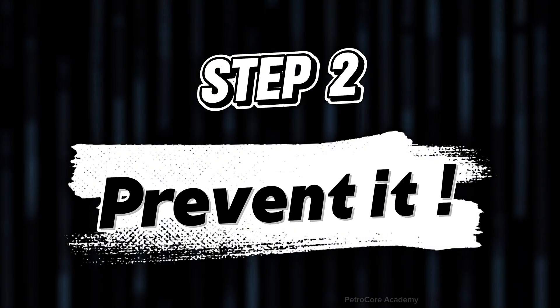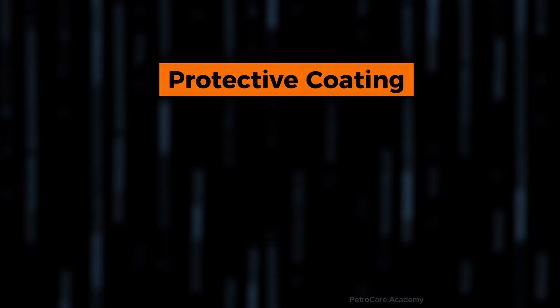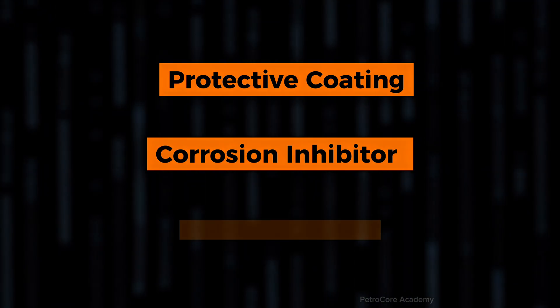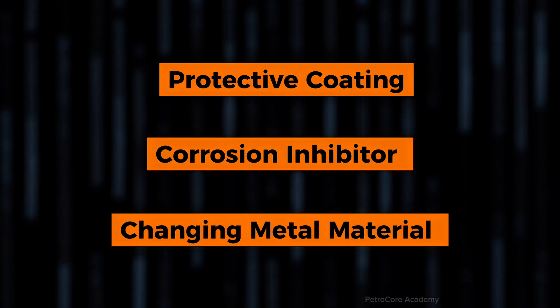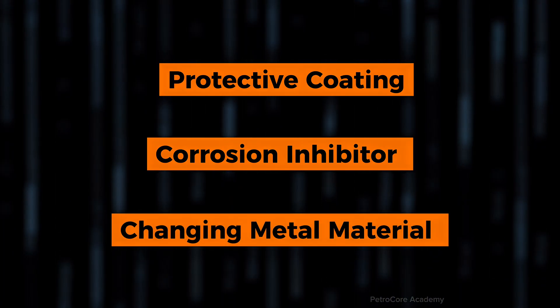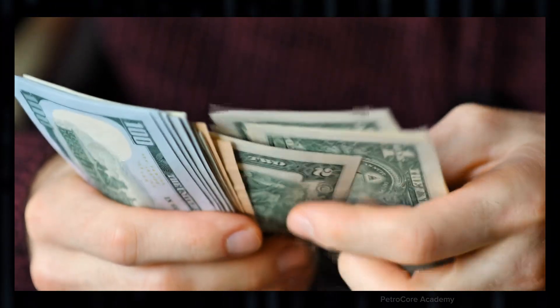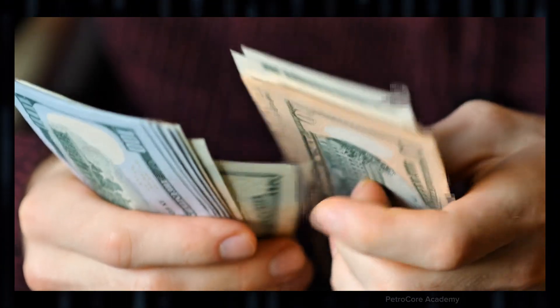Step 2: Prevent it. We can fight back using protective coatings, corrosion inhibitors, or even switching to more resistant materials like stainless steel or exotic alloys. Sure, they're pricier, but so is replacing an entire pipeline because of a pit the size of an ant's footprint.